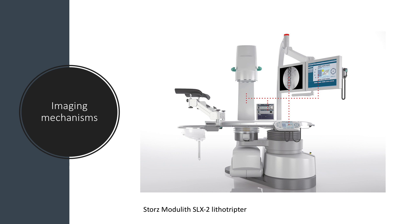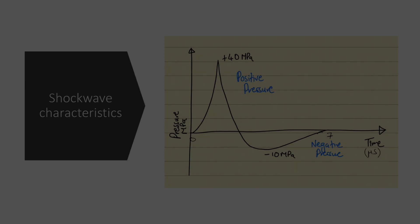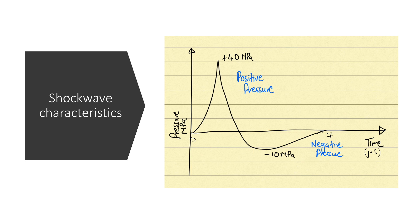Regarding the imaging modality, most modern lithotriptors have both fluoroscopy and ultrasound to enable localisation of even radiolucent stones. Those are the components of the lithotriptor. Now let's think about the actual shockwave. Here you can see a shockwave illustrated, with pressure on the y-axis plotted against time in microseconds on the x-axis — the pressure being measured at the focal point of the lithotriptor, i.e. the stone.